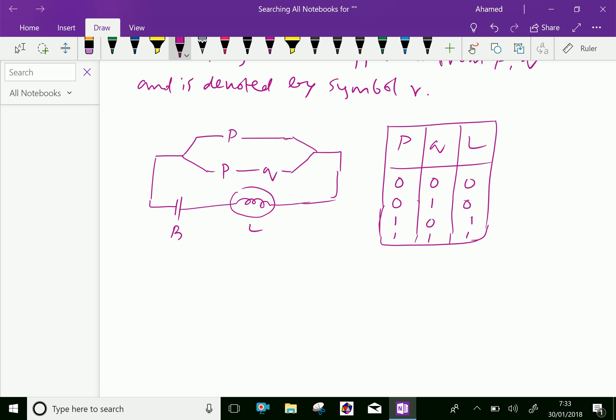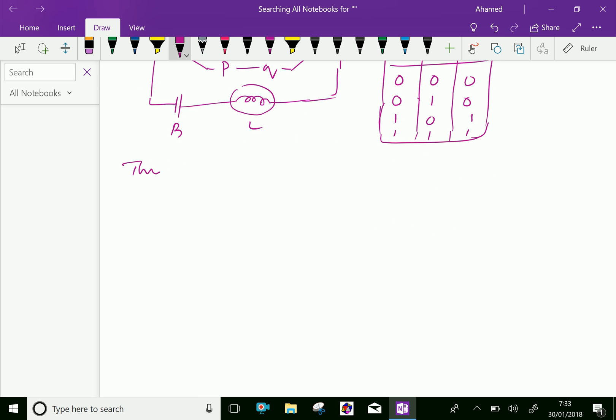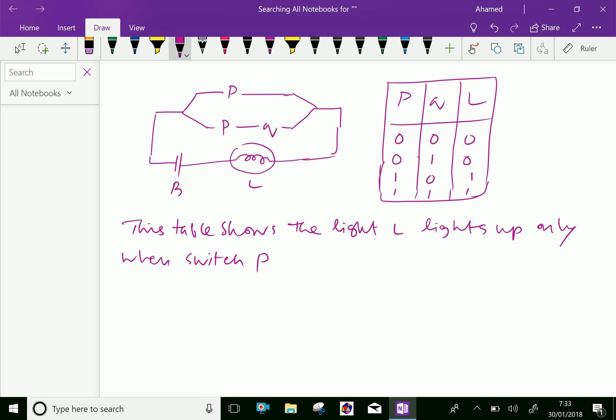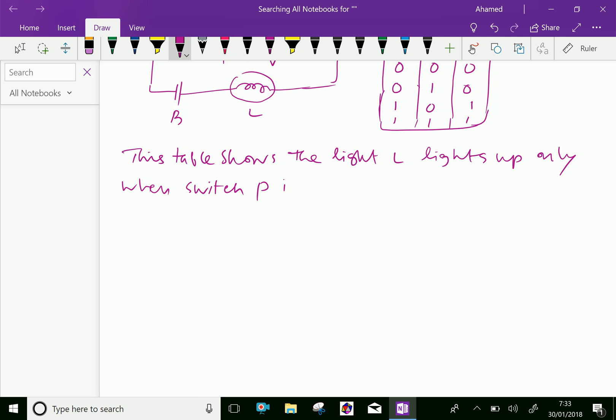This table shows the light L lights up or on only when switch P, like here, only switch P is closed, irrespective of switch Q.